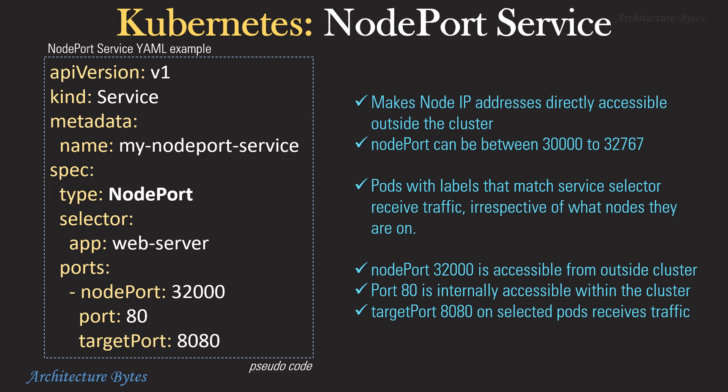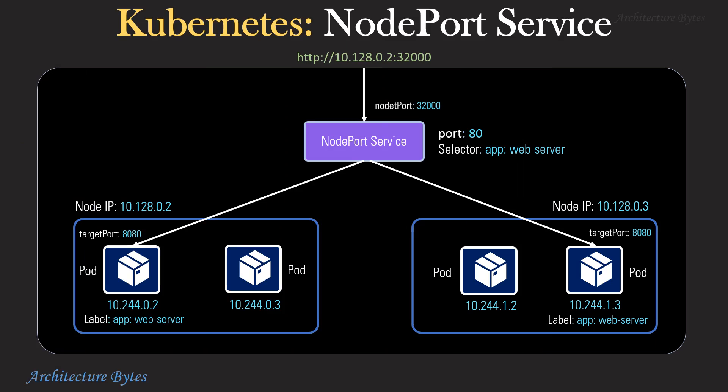Here is an example of a NodePort service. A NodePort service makes node IP addresses directly accessible from outside the cluster. A NodePort can be between 30000 to 32767. Pods with labels that match the service selector receive traffic irrespective of what nodes they are on. Node IP addresses are accessible from outside the cluster on port 32000. Selected pods receive traffic on target port 8080. However, accessing node IP addresses directly from outside the cluster is not a very good idea, because nodes may be replaced and their IP addresses could change. So let's see how a LoadBalancer service will be useful here.